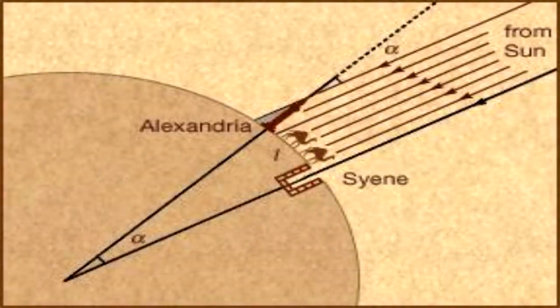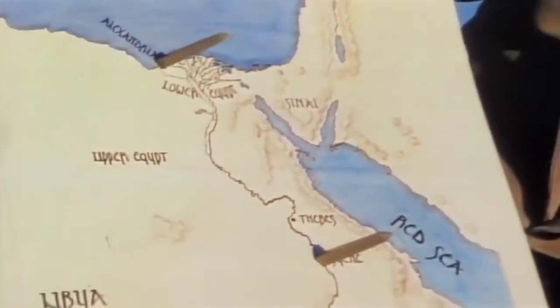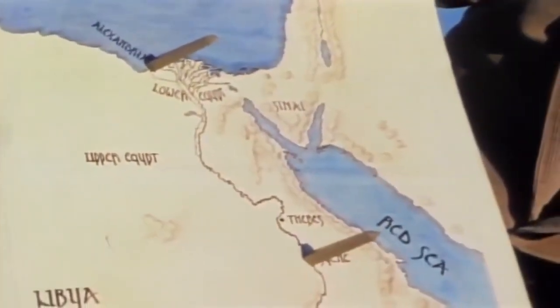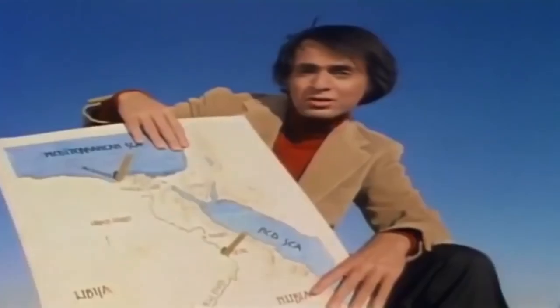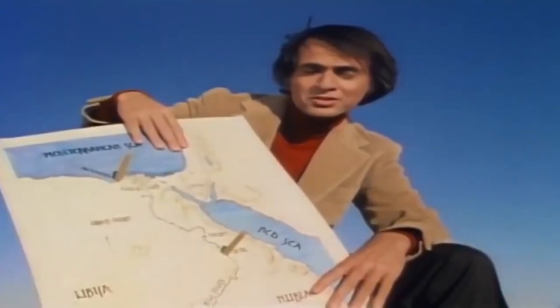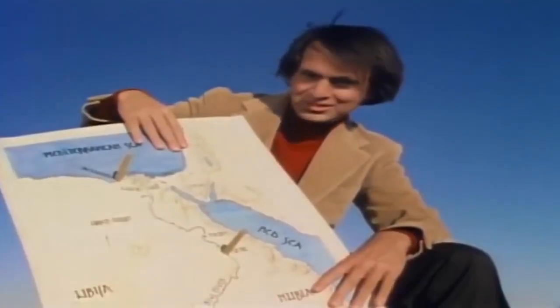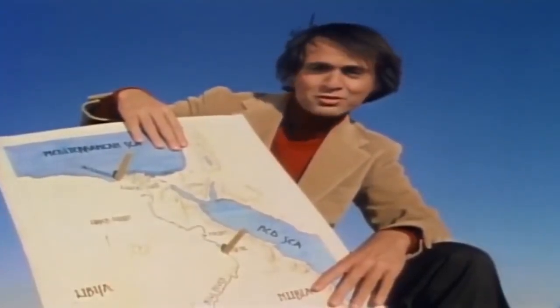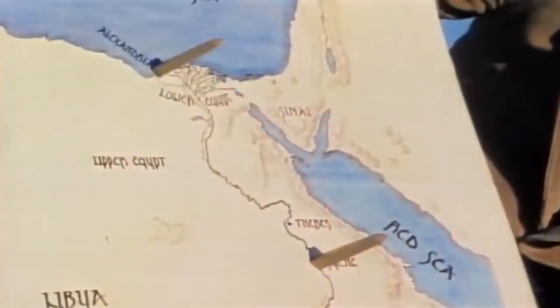Eratosthenes, Carl Sagan, and other globe proponents reason that this result is impossible on a flat earth. To quote Carl Sagan: "If at a certain moment each stick casts no shadow at all, that is perfectly easy to understand, provided the earth is flat."